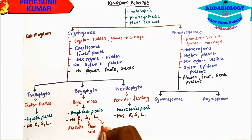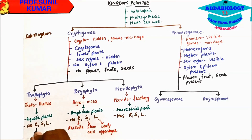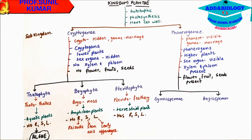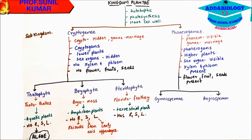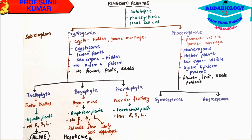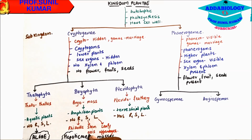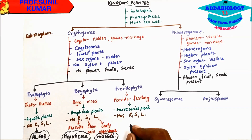Thallophyta includes mainly algae. Bryophytes include Hepaticae and Moss. Pteridophyta includes Fern. So these are the three divisions of Cryptogamae.